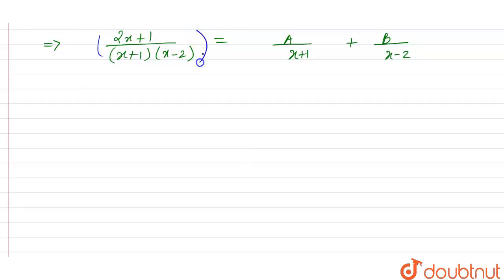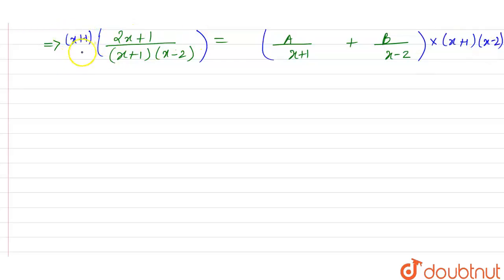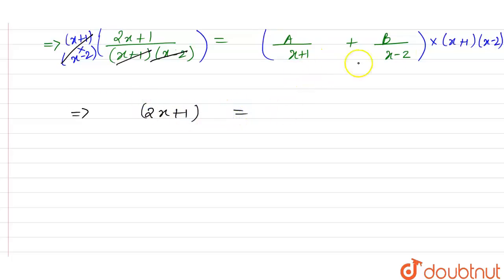We multiply both sides by (x + 1)(x - 2). On the left we are left with 2x + 1. On the right, A times (x + 1) — the (x + 1) cancels — leaving (x - 2), plus B times (x - 2) — the (x - 2) cancels — leaving (x + 1).